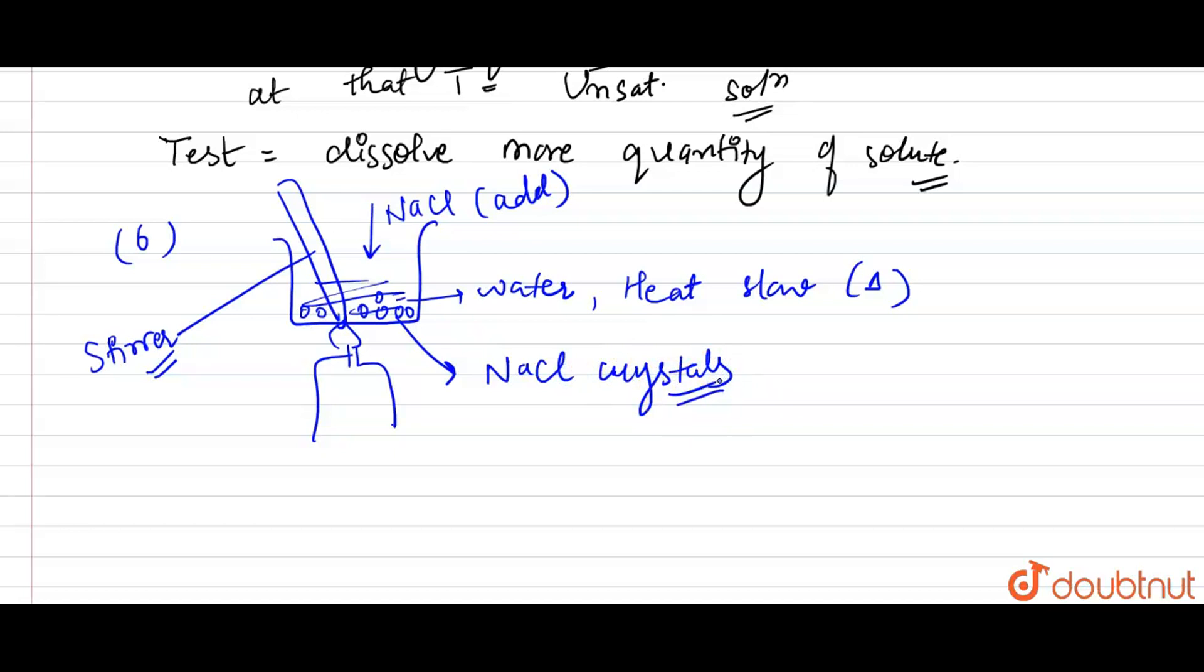The contents of the beaker are now filtered and the clear solution obtained is the saturated solution of sodium chloride at 25 degrees Celsius. We will filter the beaker content and we will get NaCl saturated solution at 25 degrees Celsius.